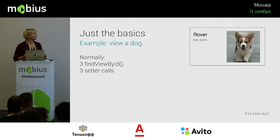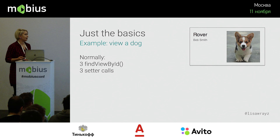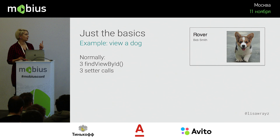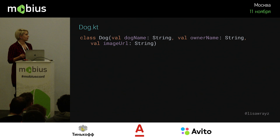We're going to look at a very simple layout with data binding using a dog example. Normally, to get this view working you need three `findViewById` calls — one for each of the text views and one for the image view — plus three setter calls, and whatever image library you're using to download the image. That's six calls just to get the most basic view on screen.